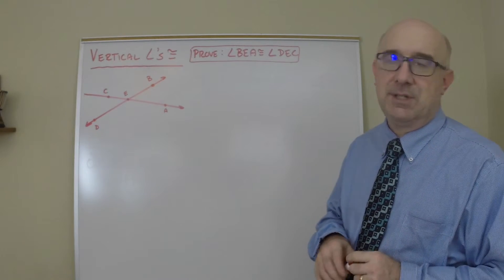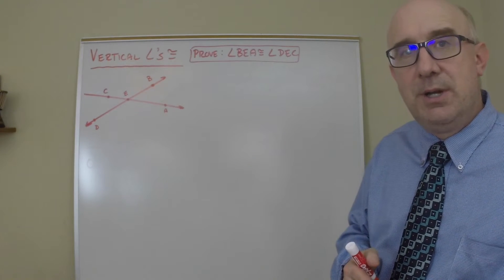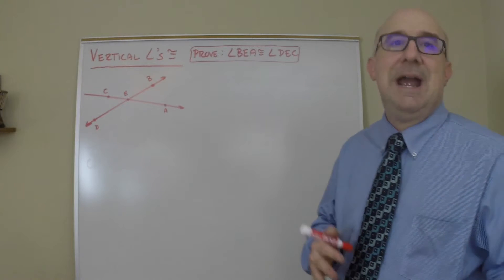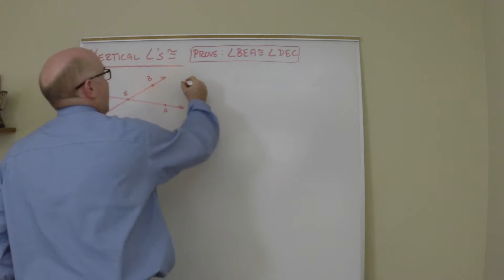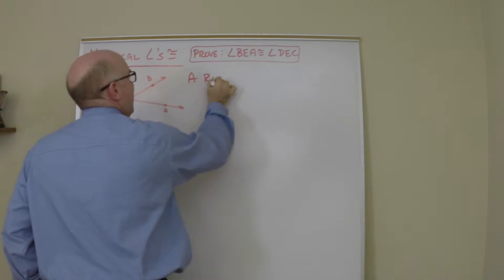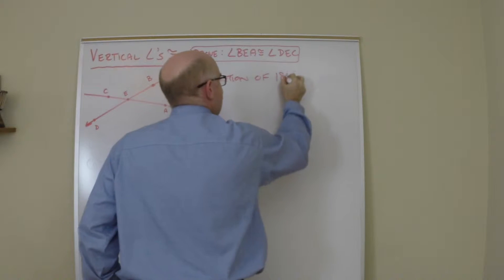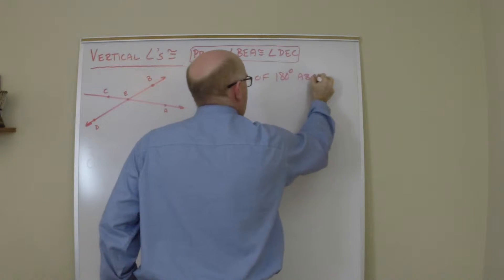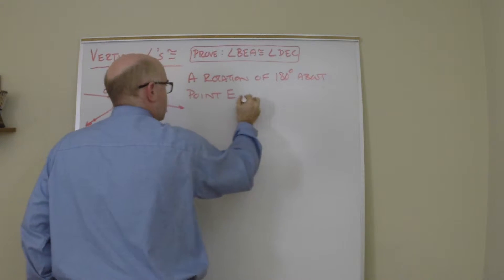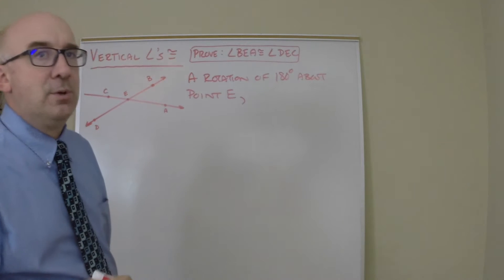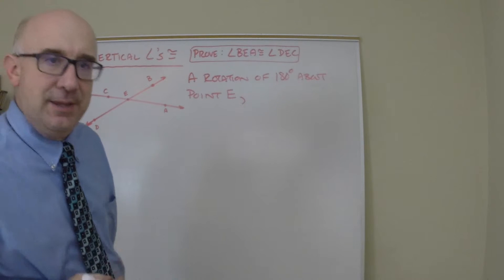Let's start. I'm going to first describe what transformation we're going to do, then see the fallout from there. I'll begin by stating: a rotation of 180 degrees about point E. Now I'll describe what that physically does in the diagram.